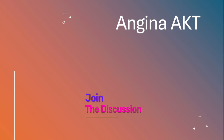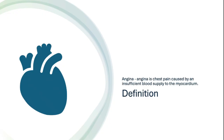I'm going to be very precise, talking about things we need to know for the AKT with regards to angina. Angina is chest pain as a result of insufficient blood supply to the myocardium. It's usually caused by narrowing of the blood vessels that supply the heart, and there are several things that might cause that narrowing.